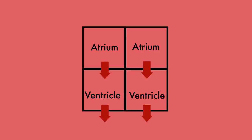Looking at this in more detail, there is a right atrium and right ventricle and a left atrium and left ventricle. The right and left sides of the heart are physically separated from each other, so to make things easier to understand, let's separate them on our schematic.